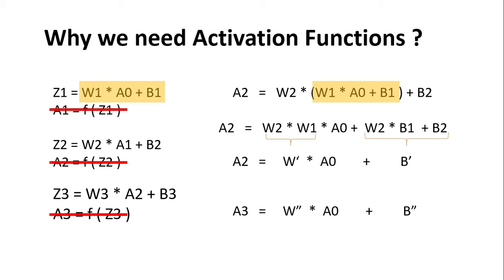So no matter how many layers we use we will be getting similar kinds of equations, and thus we will not be able to take the advantage of using multiple layers — it will become as just using one layer. Without any activation functions all these become linear. So we need to use non-linear activation functions to benefit from the different hidden layers. Also, the real world data is non-linear, and thus learning complex relationships between the data will be better suited with non-linear activation functions. That's why we need to use activation functions.